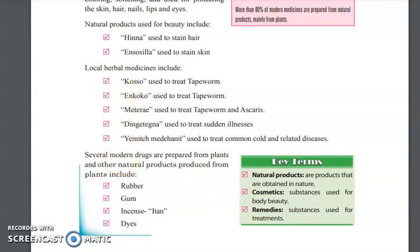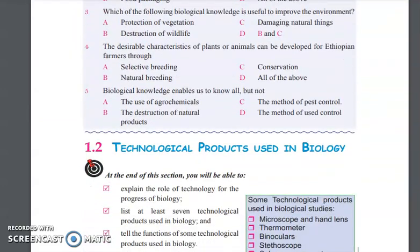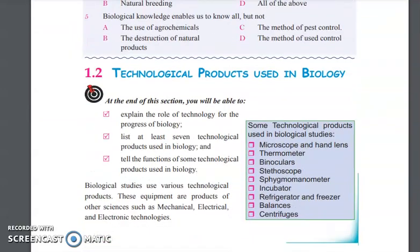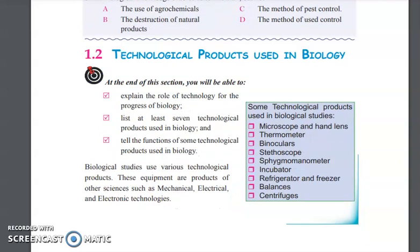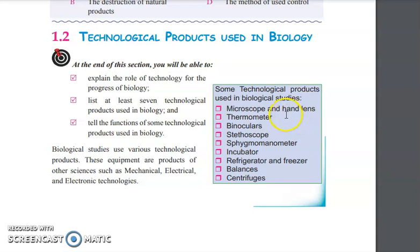Now let's come to technological products used in biology. We have microscope, thermometer, binocular, stethoscope, sphygmomanometer, incubator, refrigerator and freezer, balance, and centrifuge.